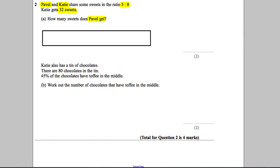I know that Pavel is in the ratio 3 to 8, so there's 3 to 8. This is Pavel's part, so there's Pavel and there's Katie. Now I know that Pavel gets three parts like that, Katie gets eight parts.